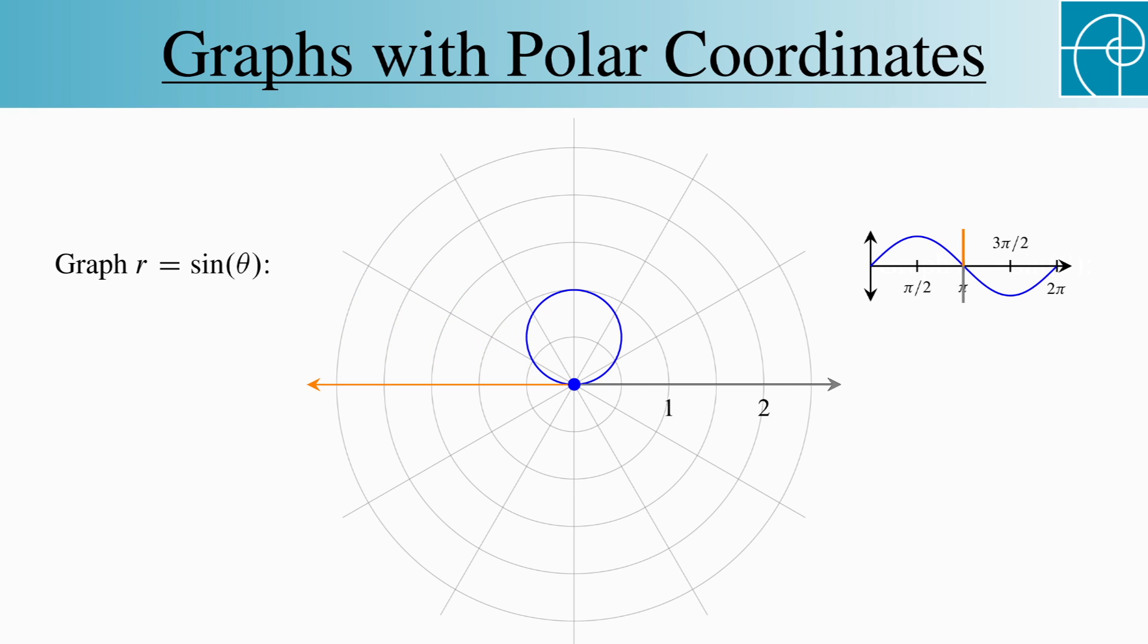So what happens between pi and 2pi? Remember from the previous video that we saw what happens when r is negative, and that's what happens on this interval. So while the angle indicates a ray pointing downward, we draw the points as if the ray were facing in the opposite direction, and we end up retracing what we've already drawn.